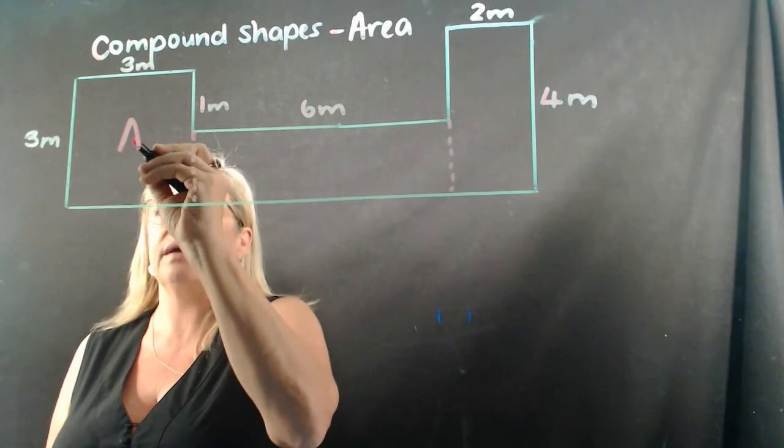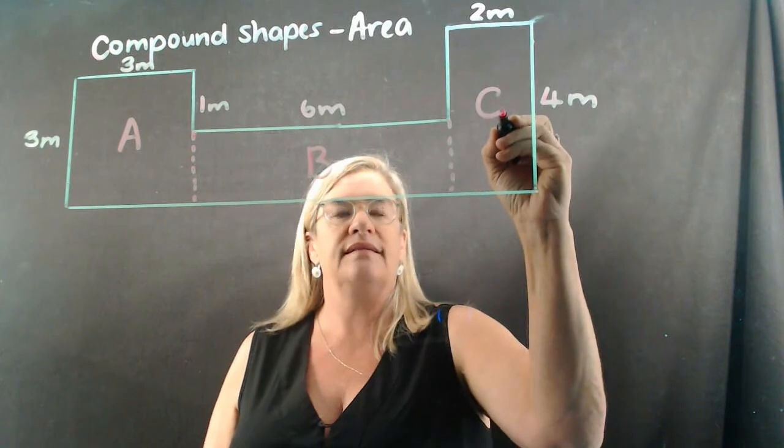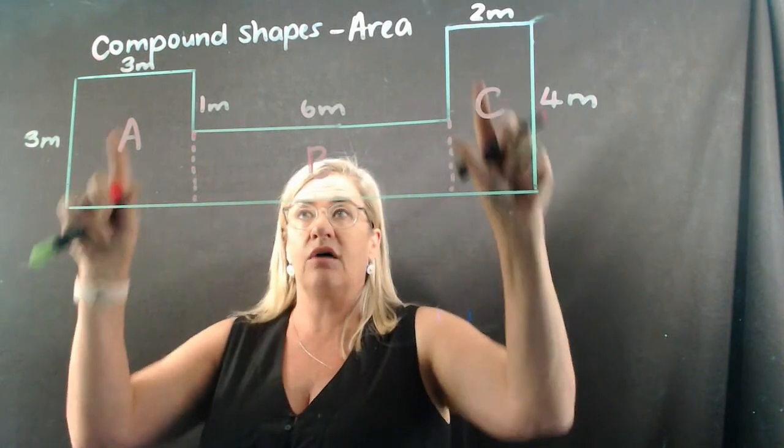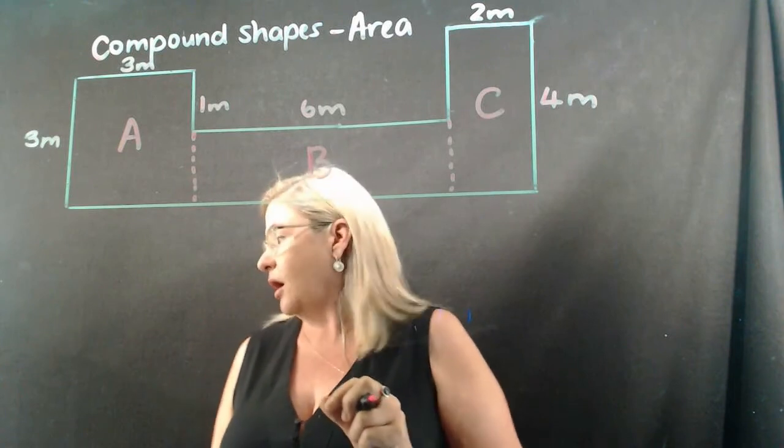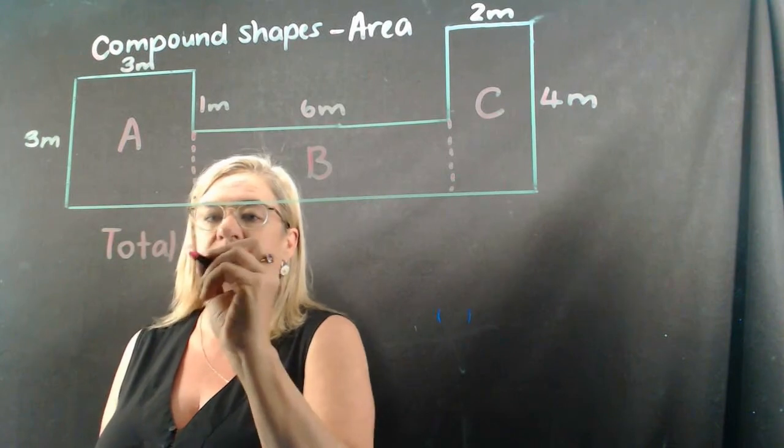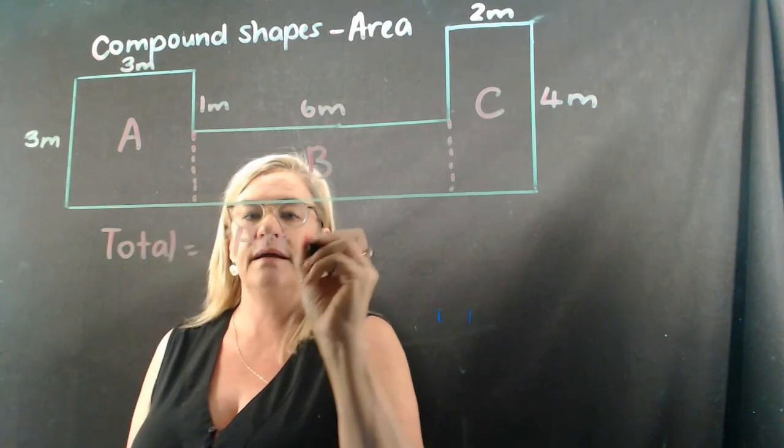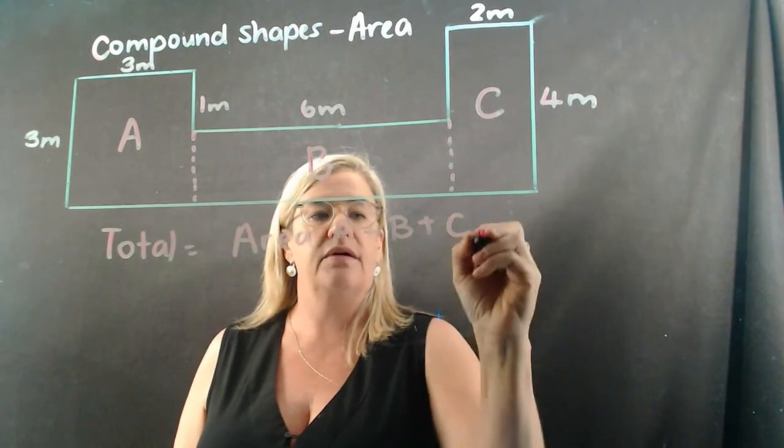Let's name them. The first one is area A, area B, and area C. And to find the area of this shape altogether, we will need a total area. So the total area is going to be area A plus area B plus area C.